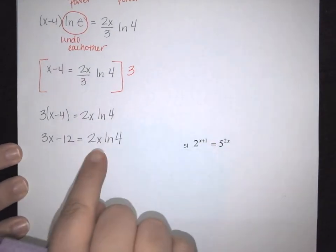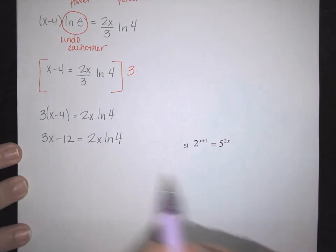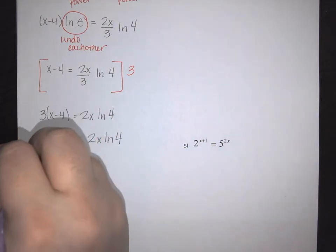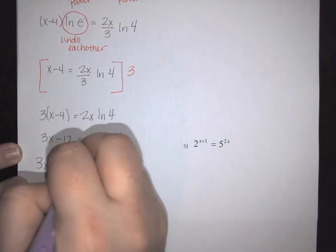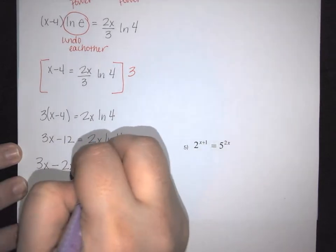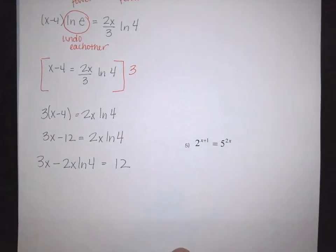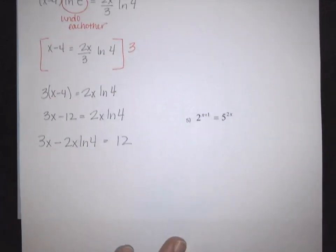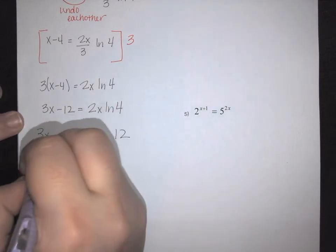Moving everything over: 3x minus 2x natural log of 4 equals 12. Swapping sides, I can then pull the x out.